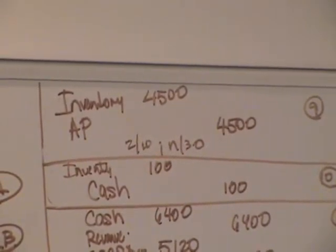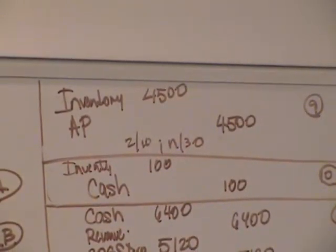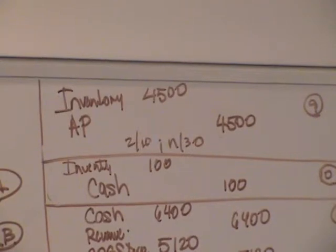We have to do another T account for Skywalker accounts payable. It's good to make another T account — just make another one. You could have used the same one because it was back to zero. It's 4,410 — that's the 2% discount.